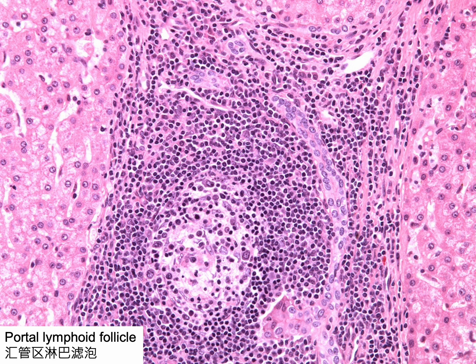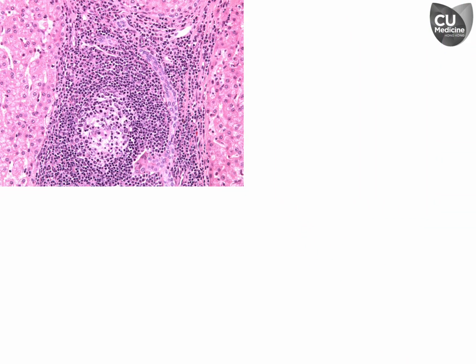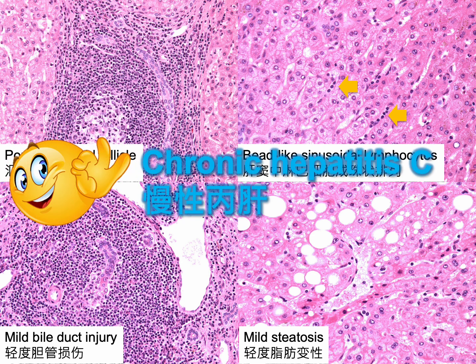The portal tract of another example contains lymphocyte predominant inflammation with a reactive lymphoid follicle. If we further identify mild bile duct injury, bile lake sinusoidal lymphocytic infiltrate, and mild macrovesicular steatosis, we can readily conclude this is a classic case of chronic hepatitis C.